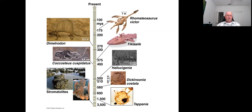Some large flightless birds closely related to the terror birds held out — the moas of New Zealand. But even they could not survive the appearance of early humans in the form of the Maoris around 1000 AD. When the Maoris first arrived in New Zealand, the moas went extinct within 100 years due to hunting.